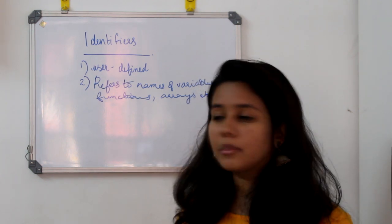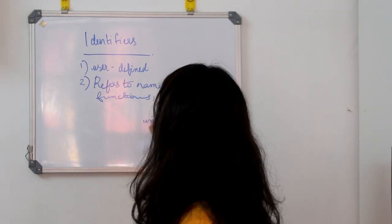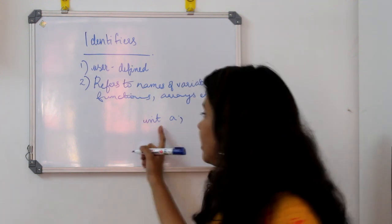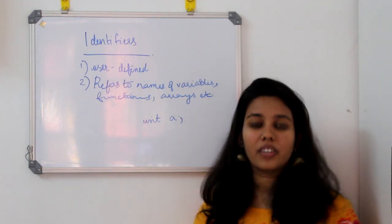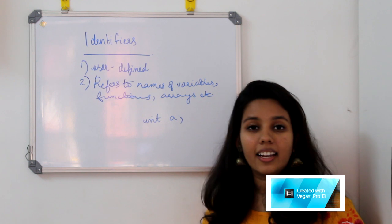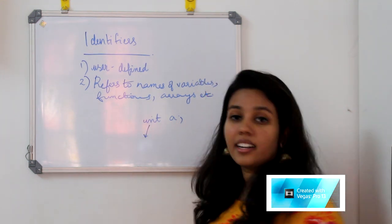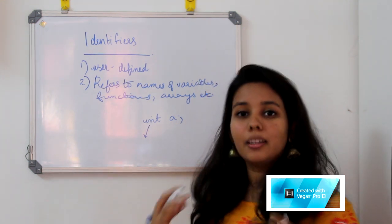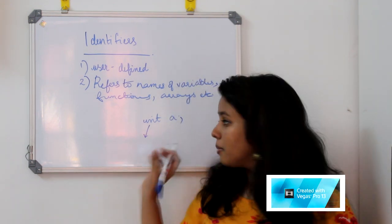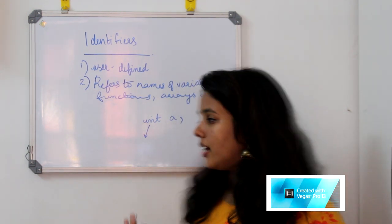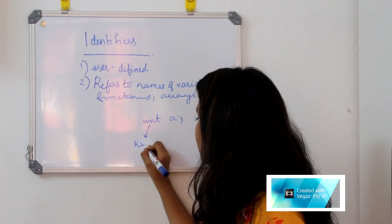Okay. Let's take an example: int A. This 'int' in C programming will have fixed meaning — int means integer data type. If we take any C program, int will have the same meaning. Now we are using a keyword.